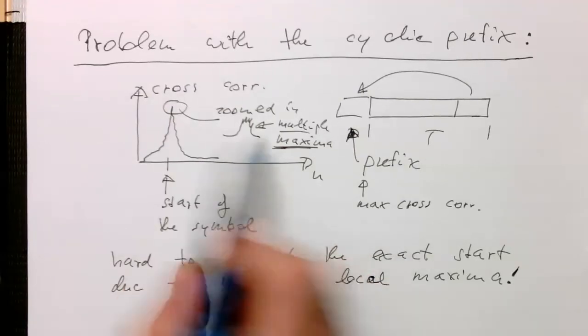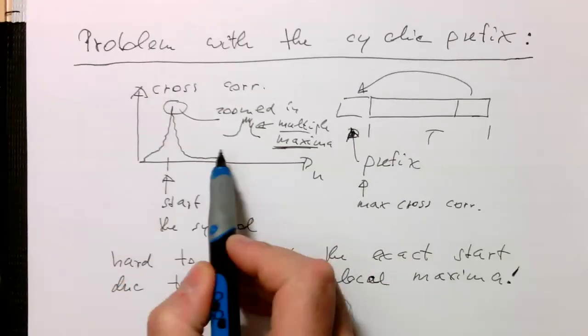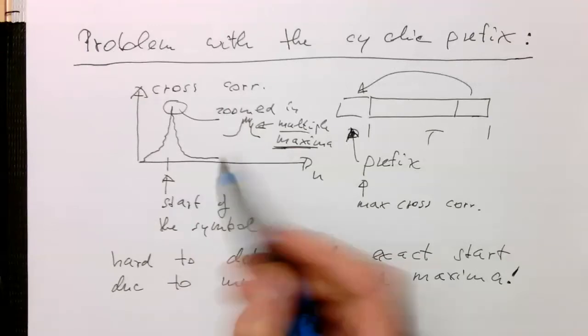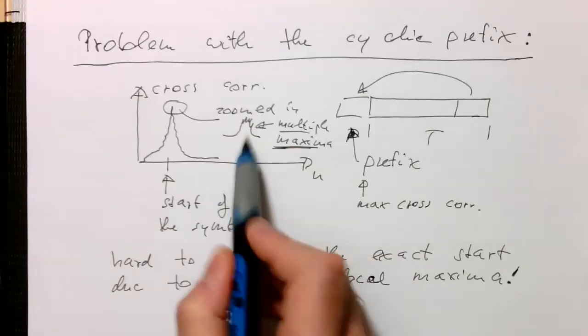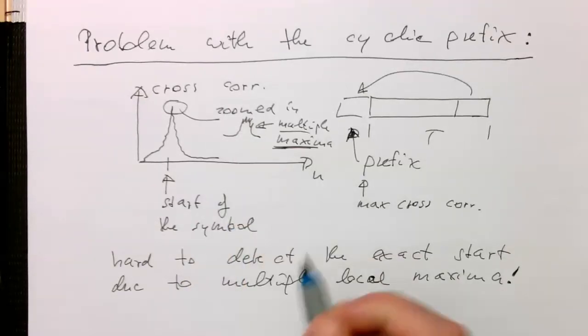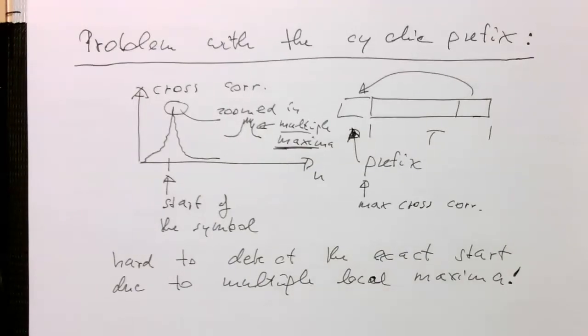Obviously, theoretically this should be just one point, but these are random numbers, so it can never guarantee that it's exactly sitting there with one maximum.